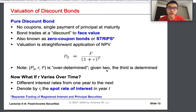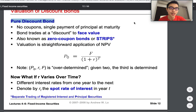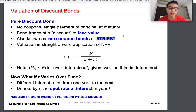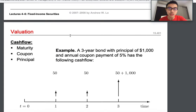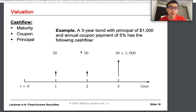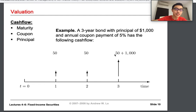Now we get to valuing the pure discount bond — the simplest bond type. The pure discount bond is also called STRIPS, which stands for Separate Trading of Registered Interest and Principal Securities. It is also called a zero-coupon bond or single-payment bond. These bonds have no coupon — they don't pay periodic interest — but pay a single payment of principal at maturity.